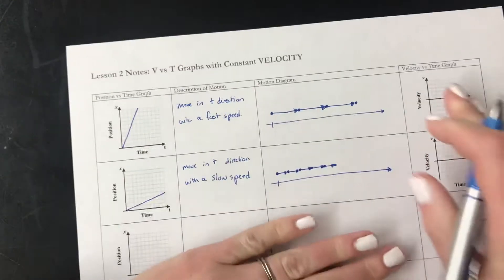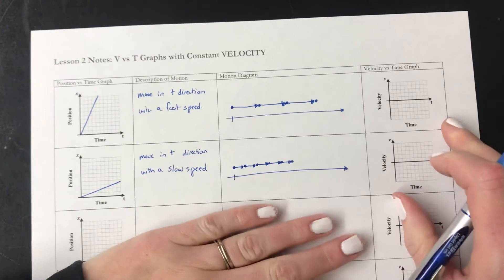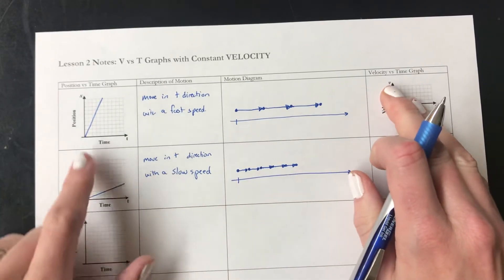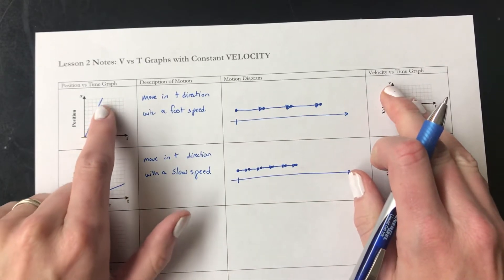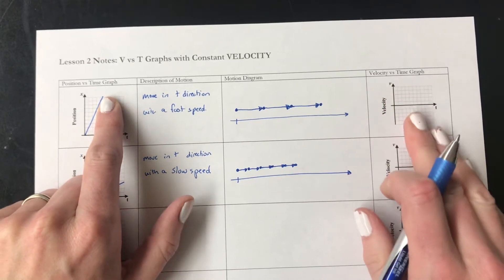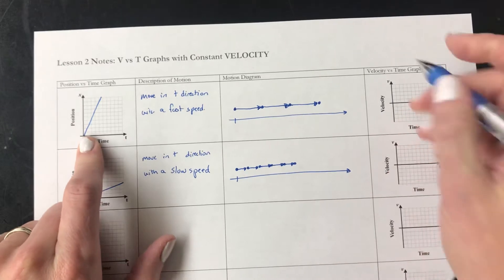Now, when we make our velocity vs. time graph, there's a couple of ways you can think about it. What we're looking at is how the speed is changing. And if you look at the speed, which is the slope of this line, it's the same slope the whole time. So I can look at it that way, I can think,